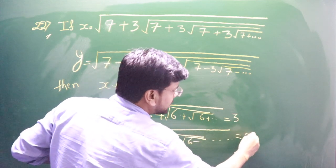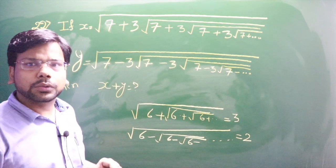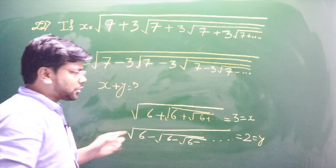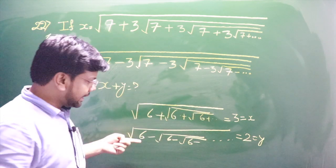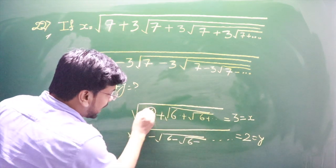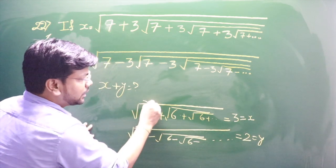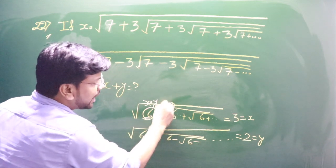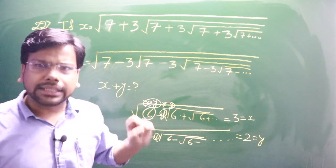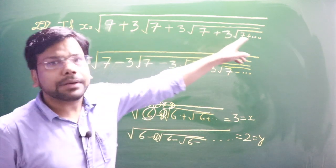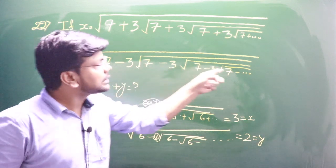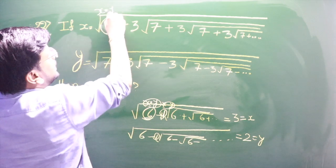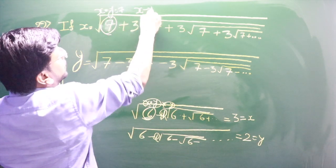If I call the all-positive-sign version x and the all-minus-sign version y, then the first number hidden in the expression is nothing but x·y, and the second number hidden is x minus y. Here, all signs are plus for x and all signs are minus for y. So we can say: x·y = 7 and x − y = 3.